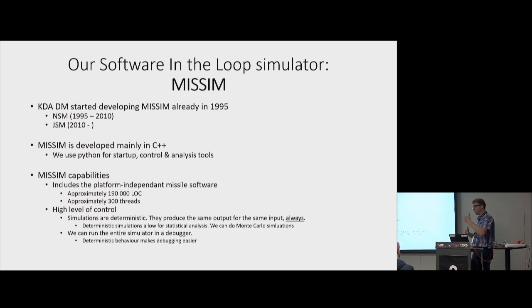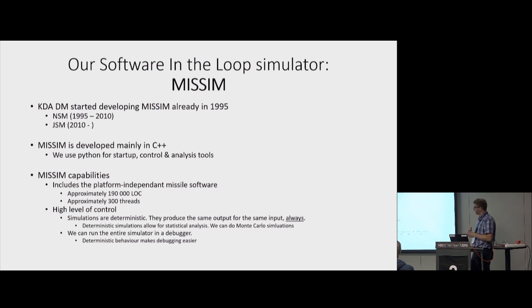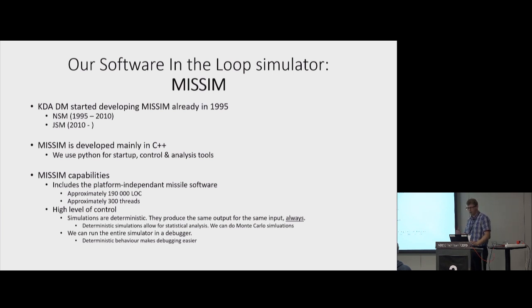Since we control the flow of execution, we can run basically the whole missile application in our debugger. When there's an error — like a null pointer or something — it will always appear because we control the flow of execution, so we can see it and get it every time. It's very helpful to have that kind of debug possibility on your desktop. When you get to hardware-in-the-loop simulations, you also have debug possibilities, but it's a lot harder.